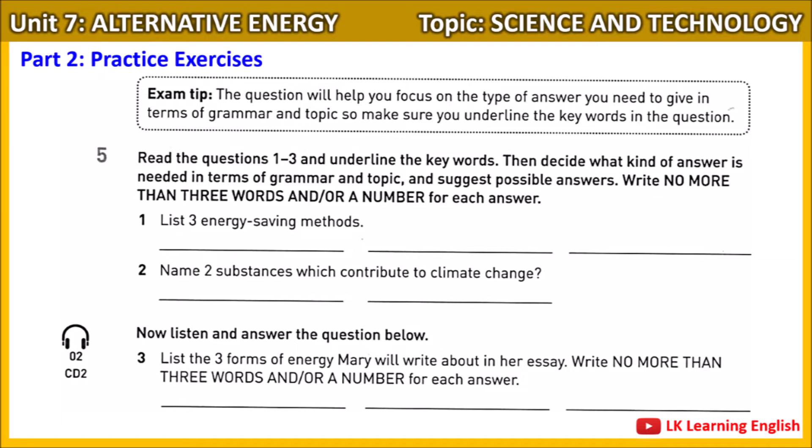Well, Mr Jones advised us to focus on just two or three forms of non-traditional energy for our evaluation. So I think I'm going to choose solar — it's fairly easy to evaluate. Are you going to explain both the positive and negative aspects? Well, Mr Jones warned us not to get too involved in the ethical aspects of the topic, so I'm going to structure my essay by using the advantages and disadvantages of each energy form.